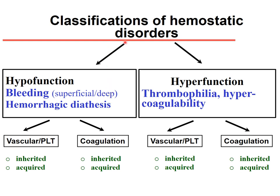The classification of hemostatic disorders has two major categories. One is hypofunction of the hemostatic processes, usually manifested as a bleeding tendency — either superficial or deep bleeding — called hemorrhagic diathesis. The other is hyperfunctioning of the hemostatic processes, called thrombophilia or hypercoagulability. In both categories, we can have vascular or platelet disorders, which can be inherited or acquired, as well as coagulation abnormalities that can also be inherited or acquired.